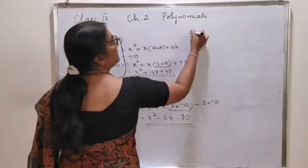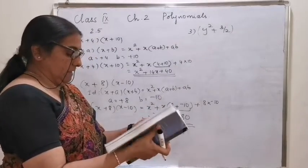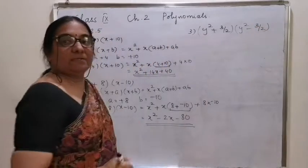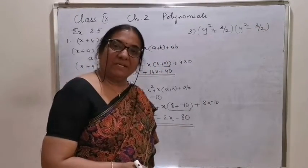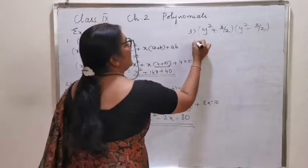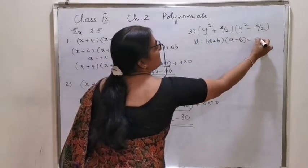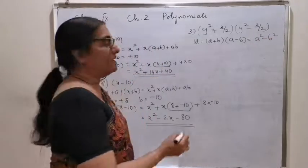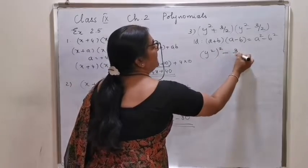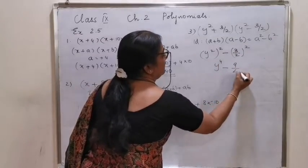Third one: y square plus 3 by 2 into y square minus 3 by 2. Two methods you can work out — either by a plus b into a minus b, that is the first identity, as a plus b into a minus b is a square minus b square, which is the same as y square minus 3 by 2 the whole square, giving y raise to 4 minus 9 by 4.